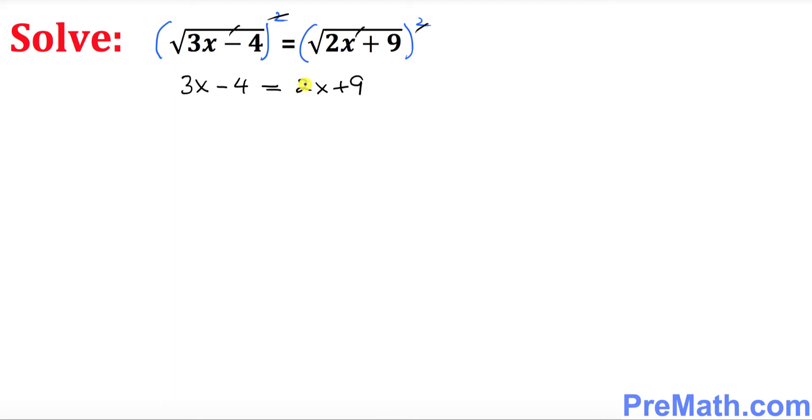Now what I want you to do is I want you to go ahead and move this 2x on this side. So when you move this one, drag this one on the other side, it becomes negative 2x. And at the same time, I want you to move this negative 4 on the right hand side. So what is going to happen is x is going to be on one side and the constant on the other side.